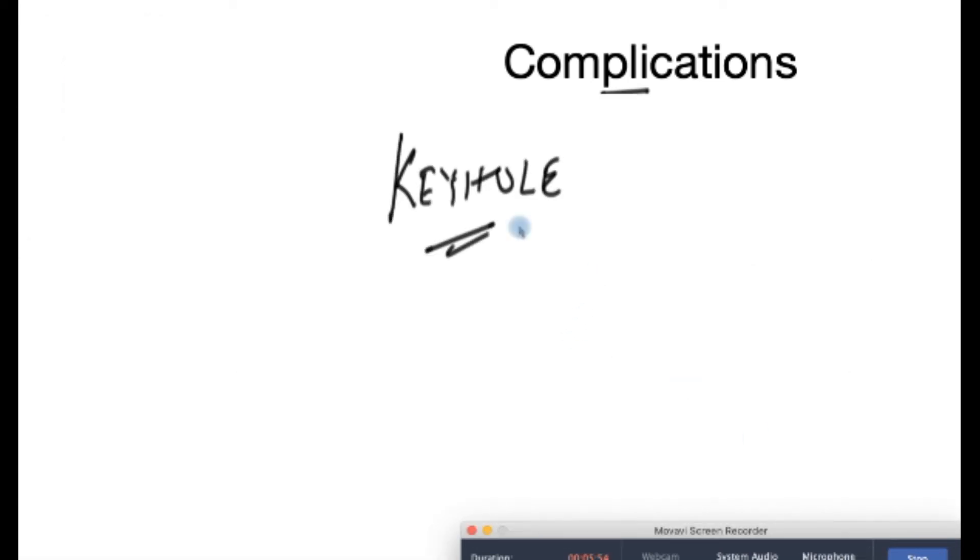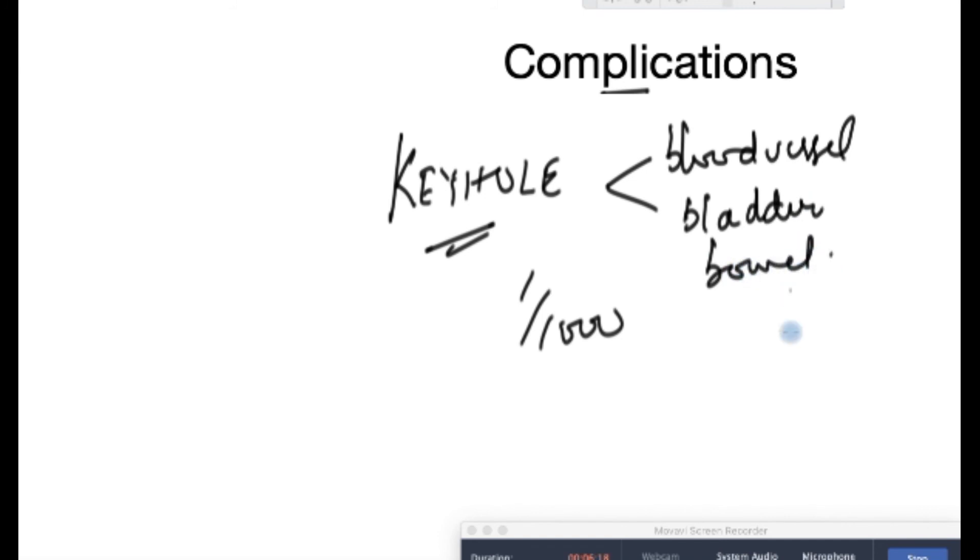So there's one small caveat to keyhole operation. Because this operation is performed from the inside, there is a one in thousand, which is a very rare complication, of a major injury to a blood vessel which may cause bleeding, or rarely to one of the organs inside such as the bladder or the bowel. That is something that surgeons warn you about, but this isn't something that should hold you back. In general, the keyhole approach is very safe, and indeed these complications are exceedingly rare.